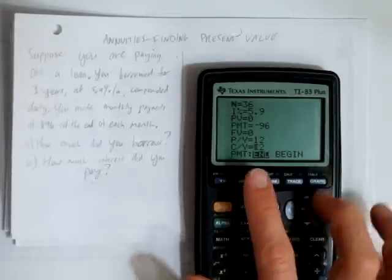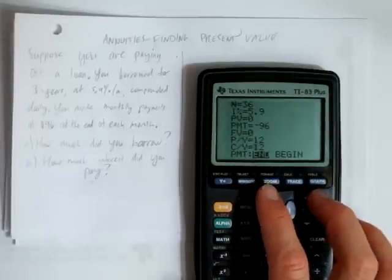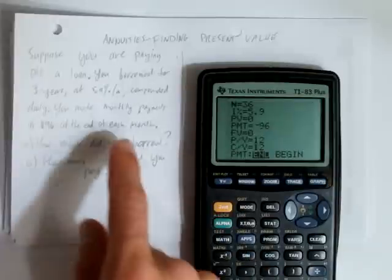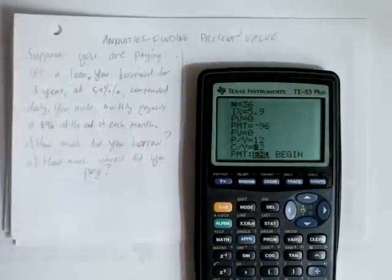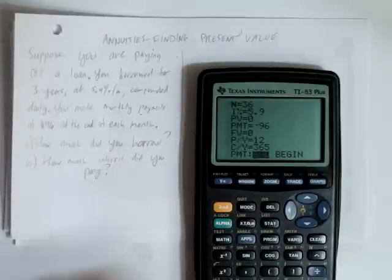But careful, the C/Y changes automatically, the compounds per year, but it isn't 12. Our interest is compounded daily, and there are 365 days at the year. We leave payment at end, because we make our payment at the end of each month.